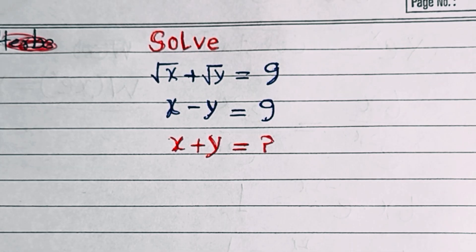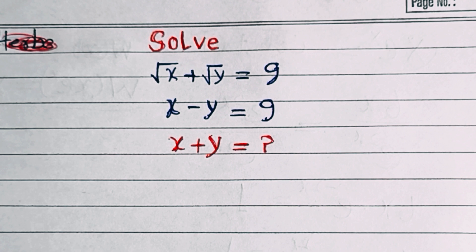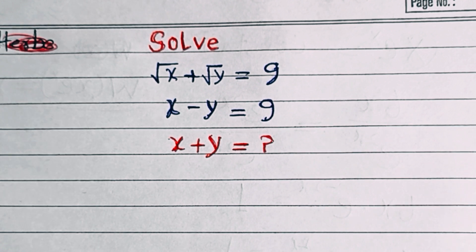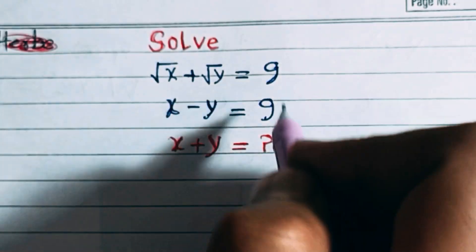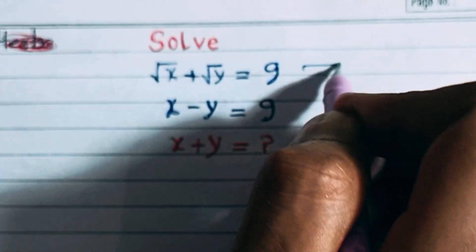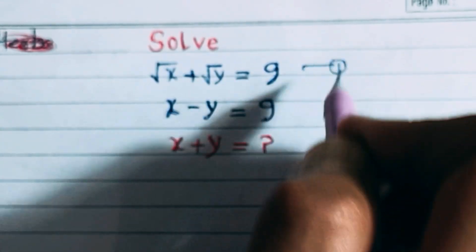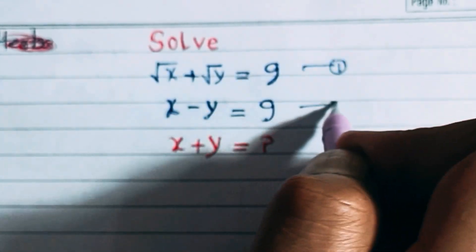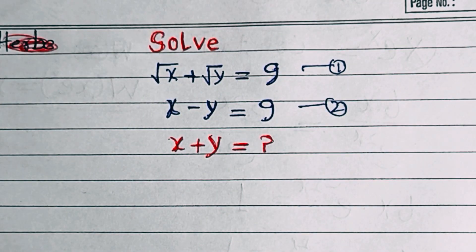Hello, welcome back to Think and Derive. In this video we have √x + √y = 9 and x - y = 9, and we will find the value of x + y. Let's make this equation number one and this is equation number two.